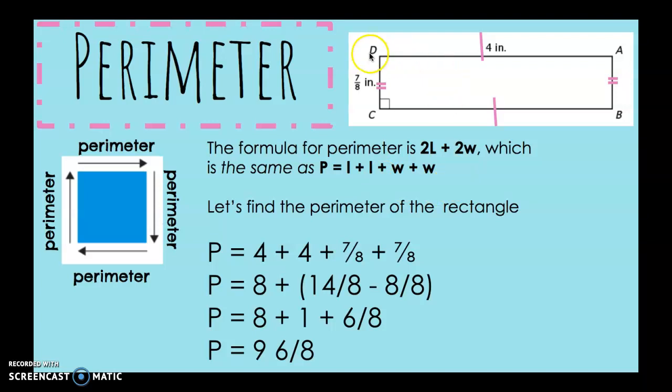As you know, in a rectangle, the opposite sides are congruent or equal. So, if this side DC is 7/8 of an inch, then AB is also 7/8 of an inch. And if this side is 4 inches, then the opposite side is also 4 inches.